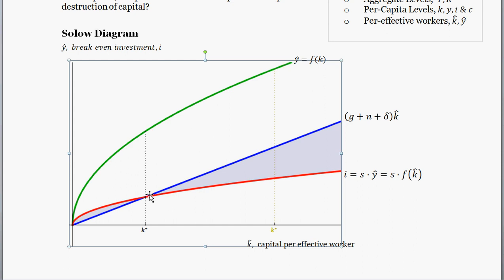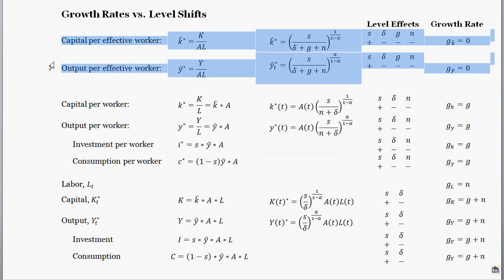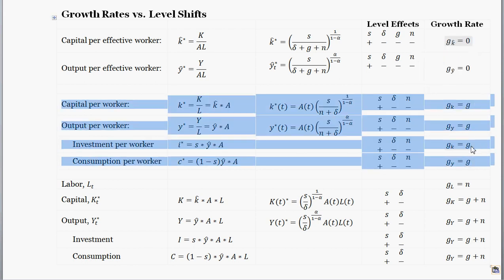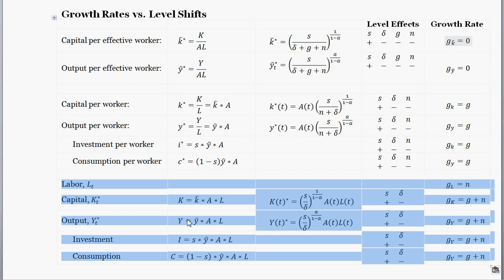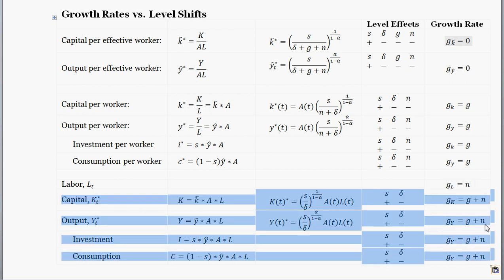In the steady state, aggregate output is growing at the rate of population growth plus technology growth. Output per worker is growing at the growth rate of technology. Everything is in equilibrium. Per effective worker levels are all at steady state with growth rate zero. All per worker levels are growing at rate G, and all aggregate levels — except population which grows at rate N — are growing at population growth plus technology growth. So it's a happy world.